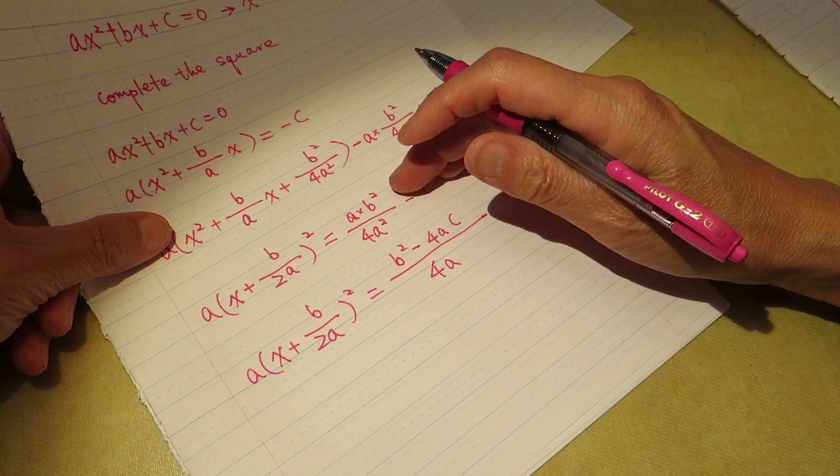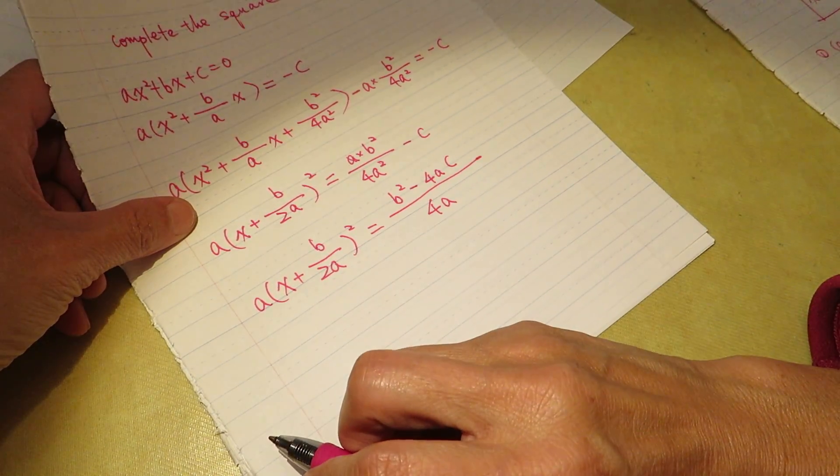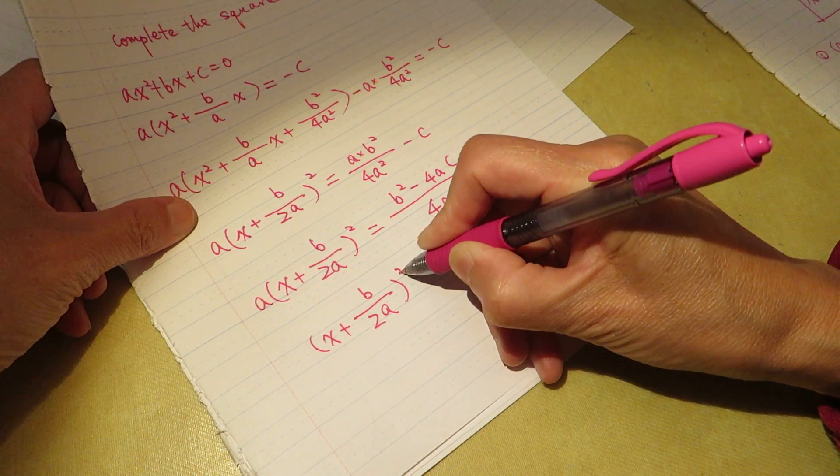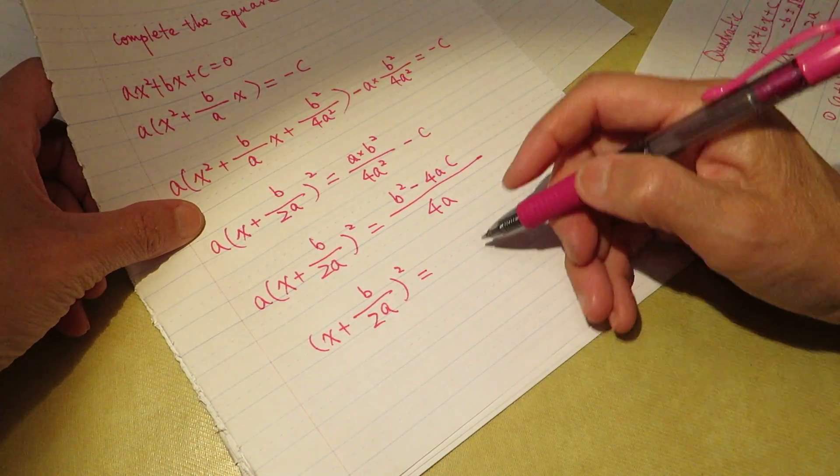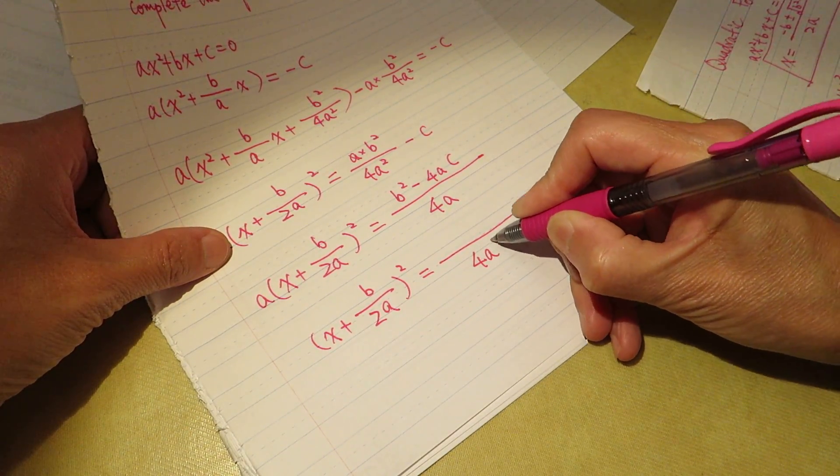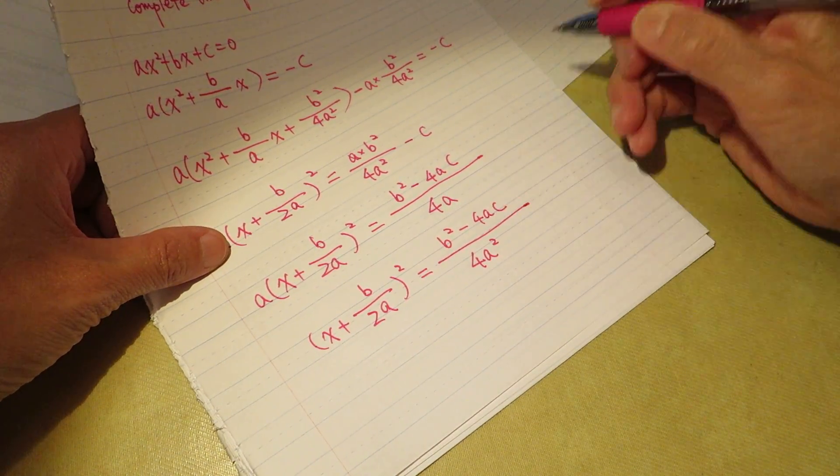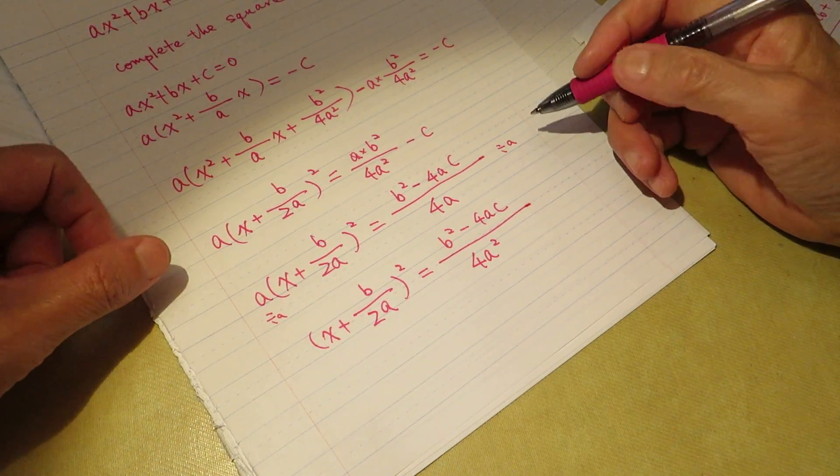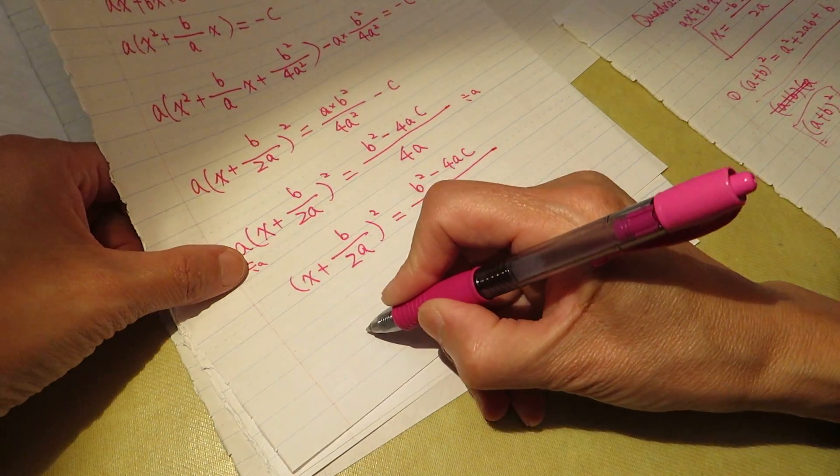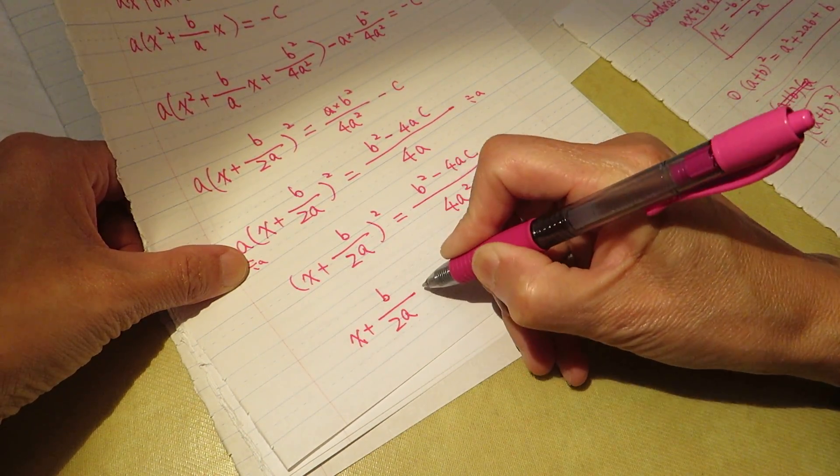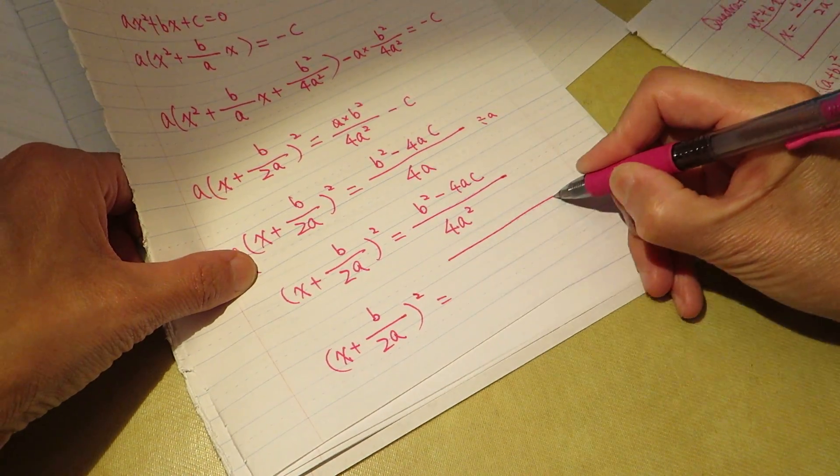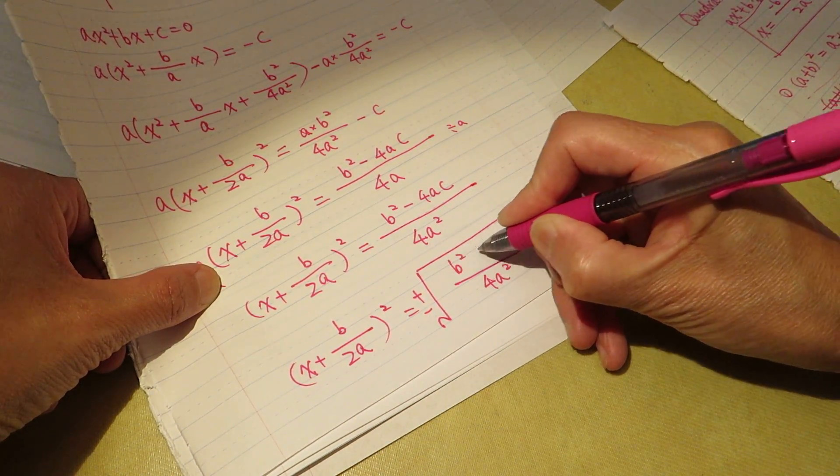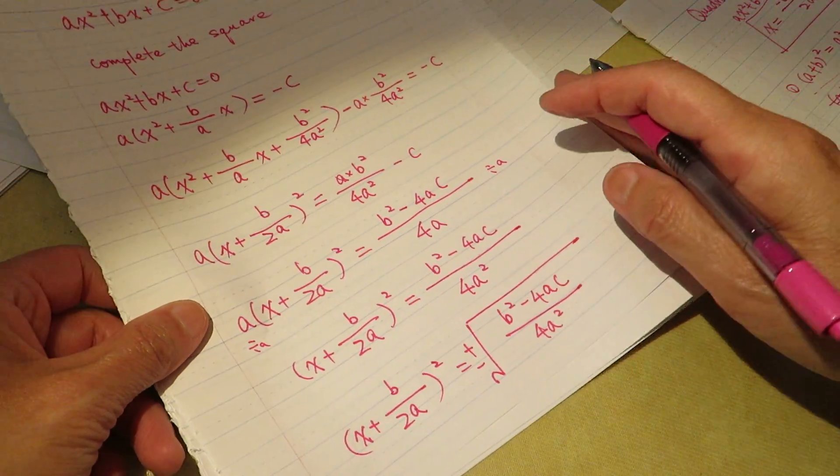I didn't change anything. So this one we can get rid of, (x plus b/2a)² equal to, and this one we need to divide it by a, b²/4a² minus c. Did I change anything? Because this one we divided by a, this side we divided by a, and divided by a is a². So (x plus b/2a)² equal to, square root, positive negative square root, b²/4a² minus 4ac, right?